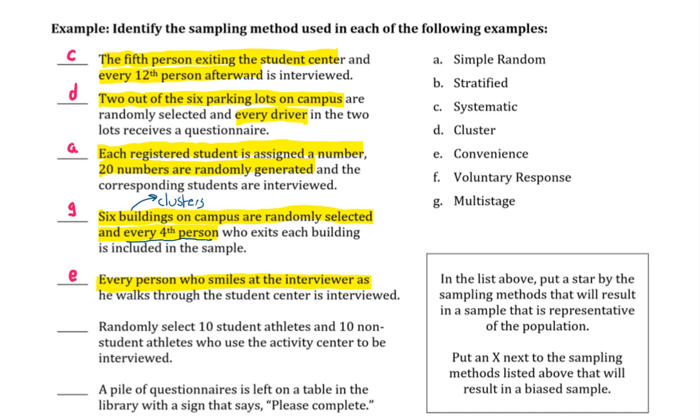If we randomly select ten student athletes and ten non-student athletes who use the activity center to be interviewed, now here you would like to see this as two strata. You have your student athletes and your non-student athletes. And then from there you're taking ten from each strata. This would be an example of stratified sampling.